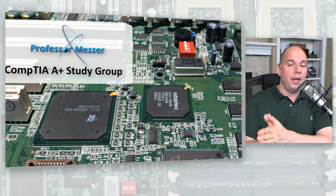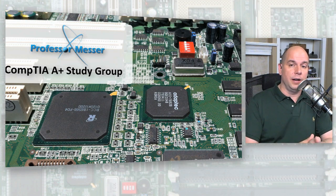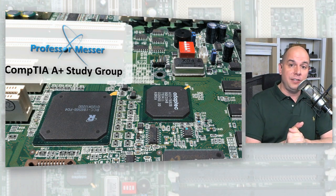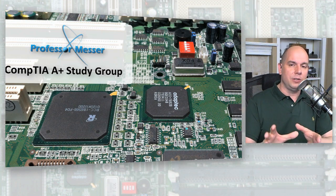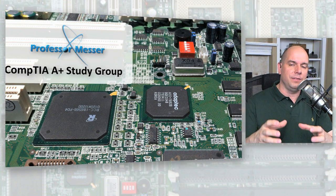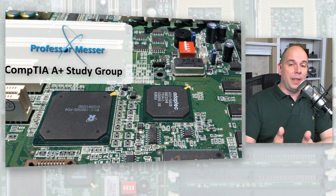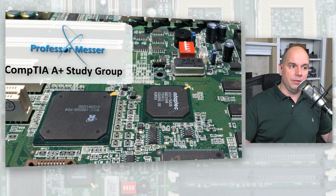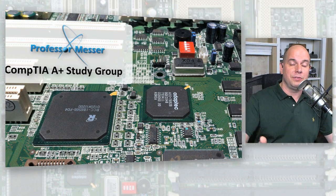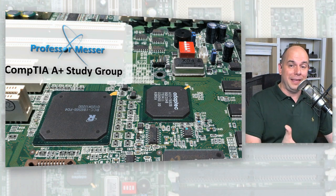Hard drives, although they are slower, have pretty quick transfer rates on the latest models — 6 gigabits per second for the third version of SATA, and even faster for Thunderbolt-connected drives. One of the nice parts about hard drives is they are relatively inexpensive on a per-gigabyte basis. I can get a 3 terabyte hard drive for less than $200, which is fantastic from a pricing perspective. That same price might only get you a 512 GB or 768 GB SSD drive.